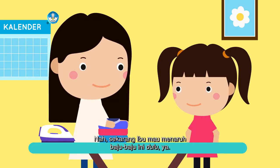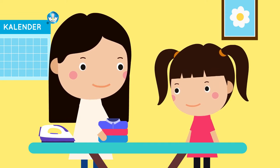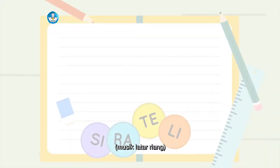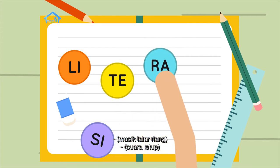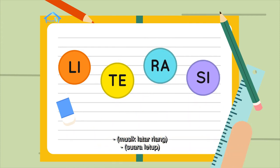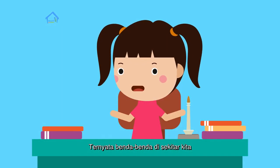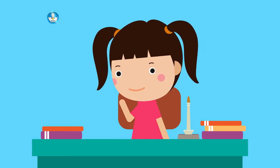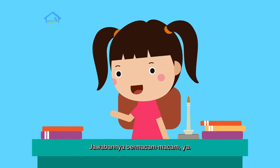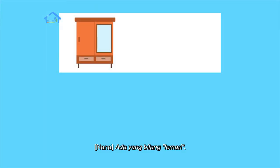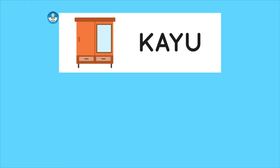Nah, sekarang ibu mau menaruh baju-baju ini dulu ya. Iya, Bu. Ternyata, benda-benda di sekitar kita bahan dasarnya macam-macam. Coba kalian sebutkan. Iya, jawabannya bermacam-macam ya. Ada yang bilang lemari. Bahan dasarnya apa, teman-teman? Benar, bahan dasarnya dari kayu.